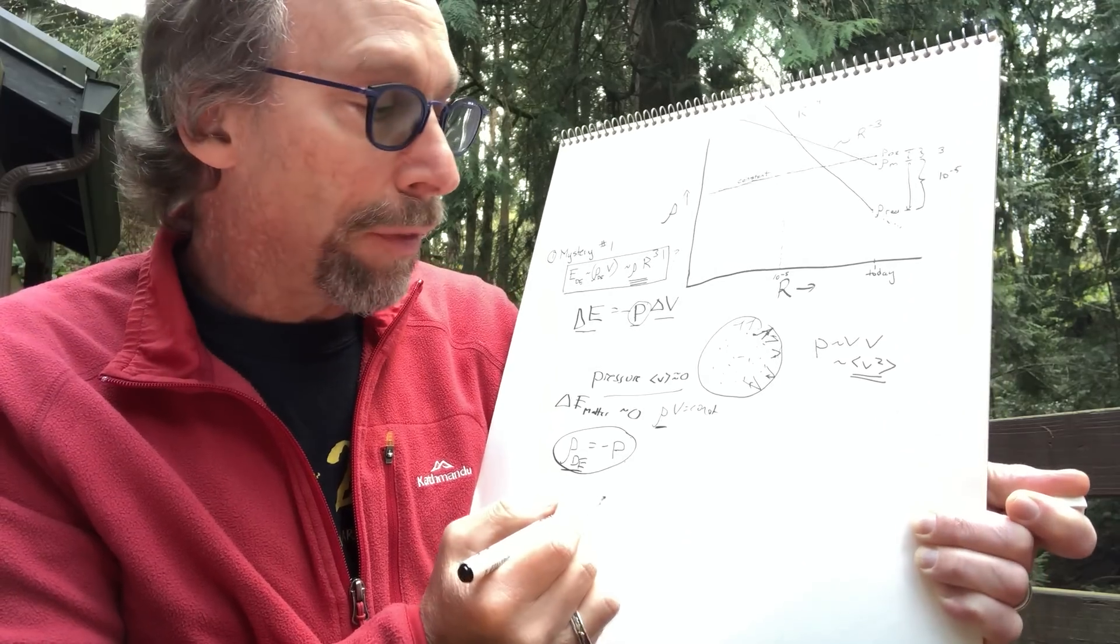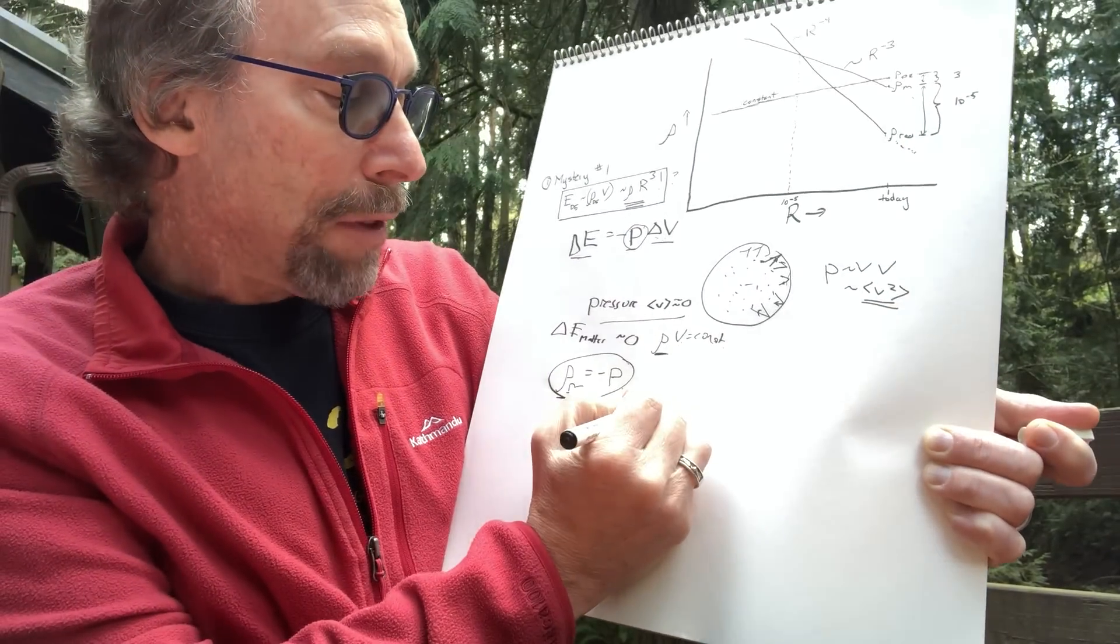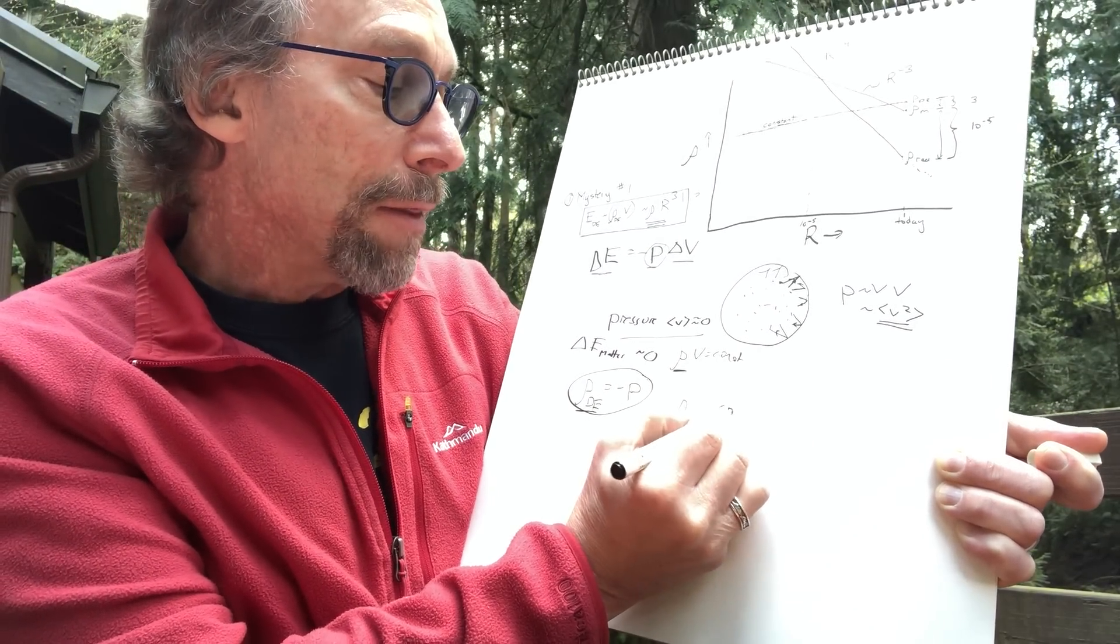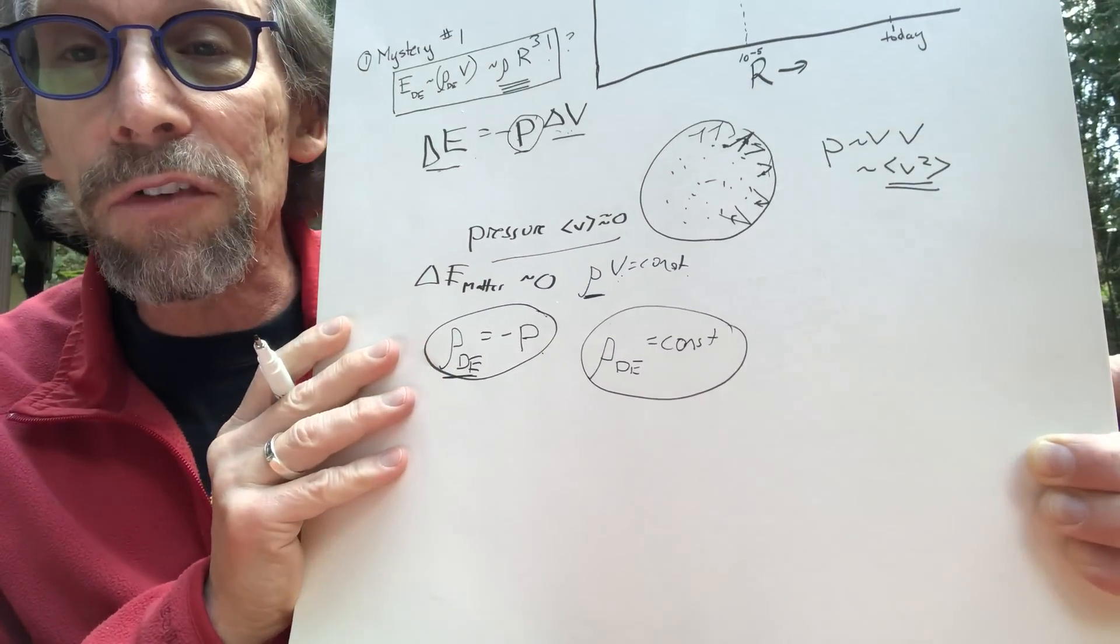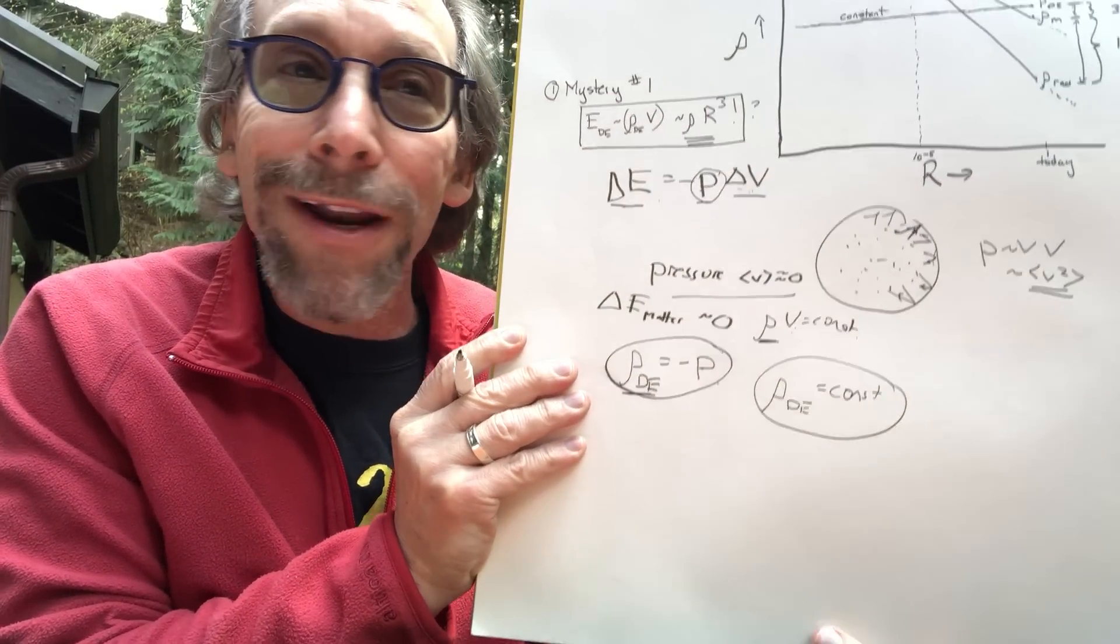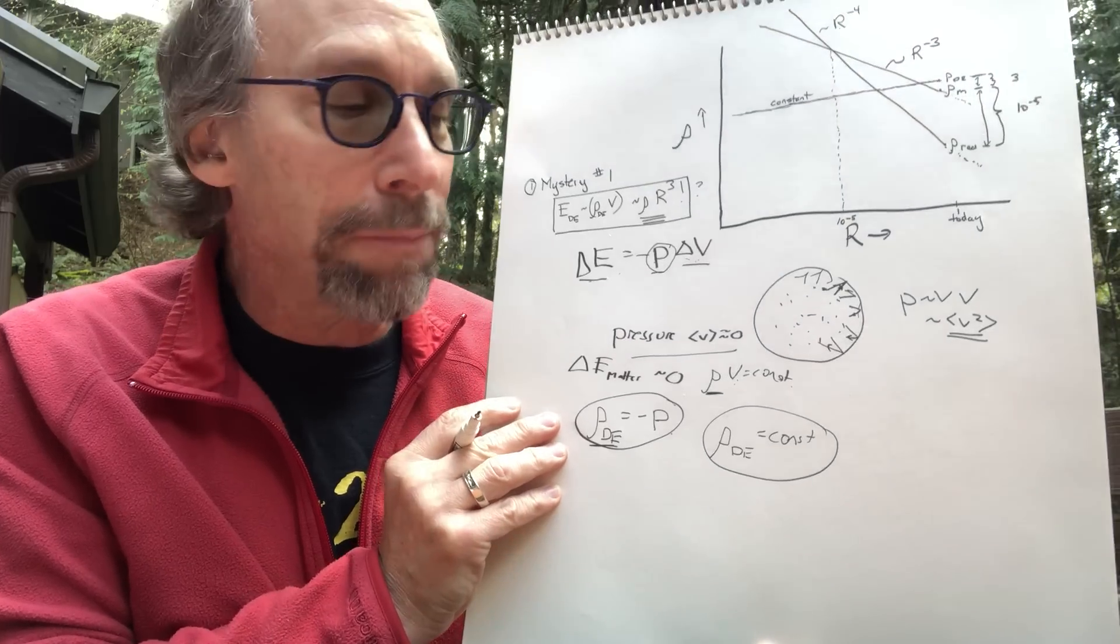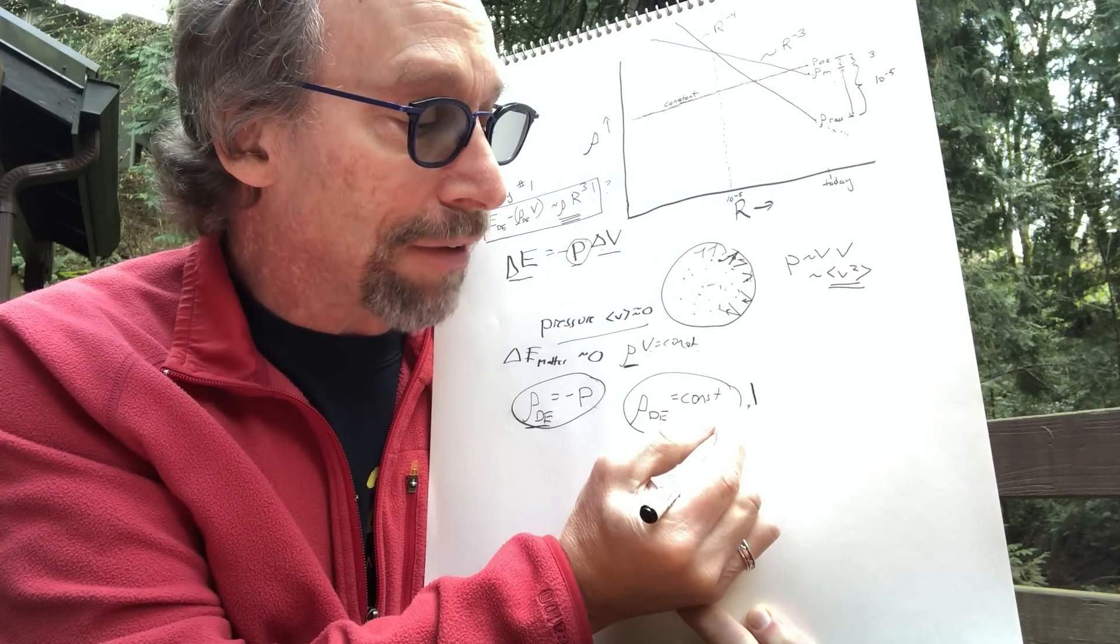But what I did want to end with are the two things that are weird. First of all, the fact that this dark energy is constant. Namely, that there is an energy in empty space. As I said, that's weird. Because while we can describe mathematically that energy, how did it get there? And we don't have the slightest answer. We do not know why empty space has the energy it has. And that is certainly one of the biggest mysteries in physics.